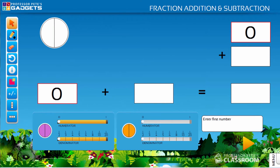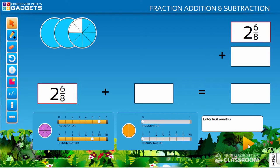Clear the screen and enter a more complex addition with different unrelated denominators. Enter 2 and 6 eighths. Enter the second number, 1 and 2 thirds.